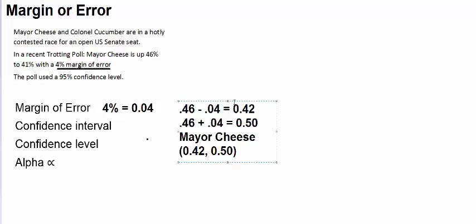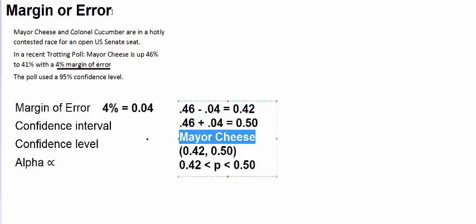You can think of this as a proportion. Sometimes we use interval notation. Another way you will see this written is 0.42 is less than p, population parameter or the actual proportion, less than 0.5. That would be the confidence interval for Mayor McCheese.